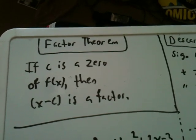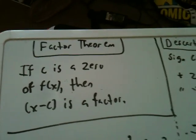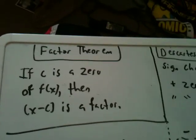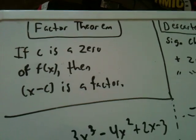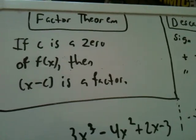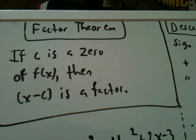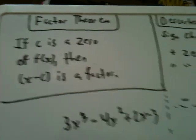So if 2 was a zero, then x minus 2 would be a factor. If negative 3 was a zero, then x plus 3 is a factor. It's going backwards between the synthetic division. And that's just it.